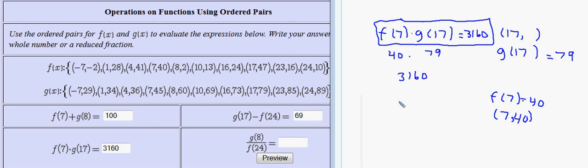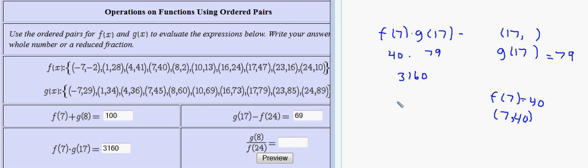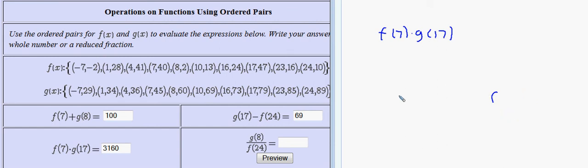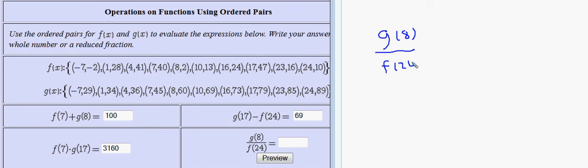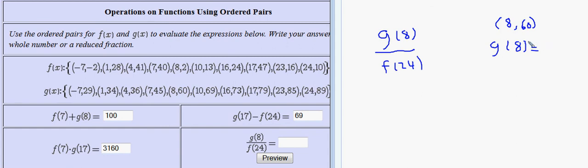The last question has me doing much of the same, except I have to divide g by f for a couple of different input values. Copying down the problem, I have g of 8 over f of 24, and the problem says to write your answer as a whole number or a reduced fraction, so we may need to reduce. Looking at g of 8 — finding the point on g whose first coordinate is 8, make sure you go to g — I have the point 8 comma 60. So g of 8 is 60.